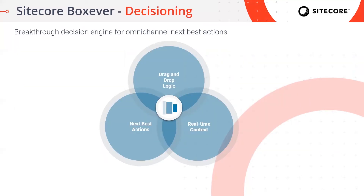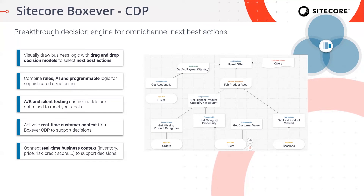Once the data is available, we need to be able to act on it. Sitecore BoxEver decisioning provides users an easy way to model decisions and next-best actions based on customer and system data in real-time. In the decision canvas, customer data in the Sitecore BoxEver CDP is available to be dragged and dropped into a sequence. Data from internal systems can also be used to provide business context on top of customer data, including inventory, product prices, propensity models, or other AI systems. Once on the canvas, decision tables are used to provide a method to easily map data inputs to offers, experiences, or actions.